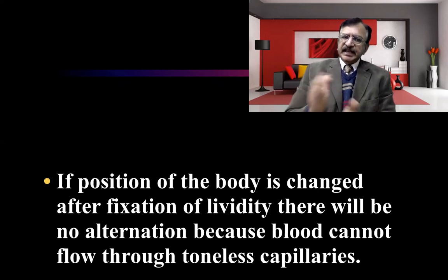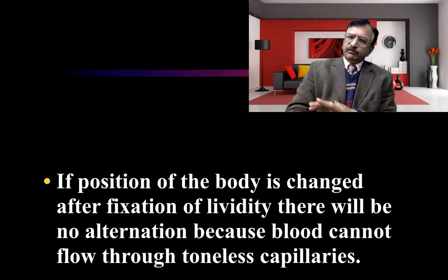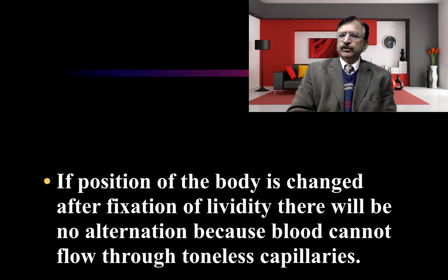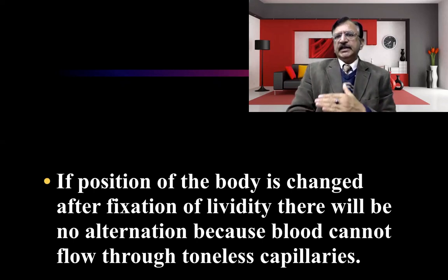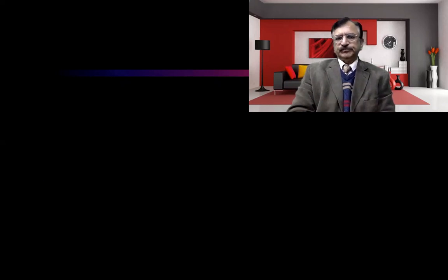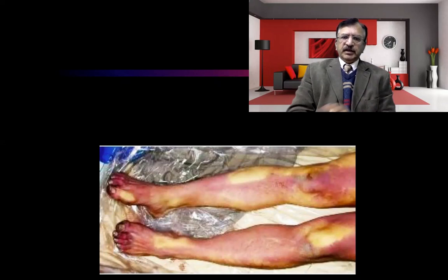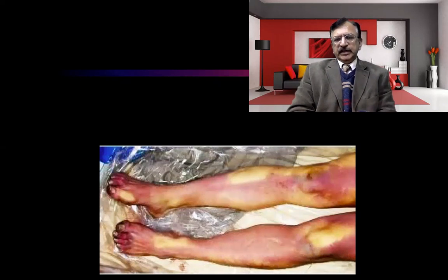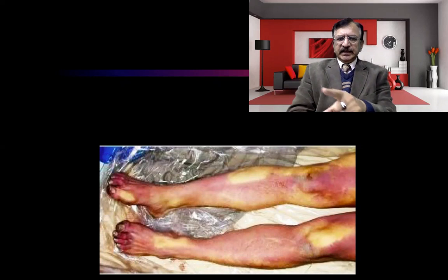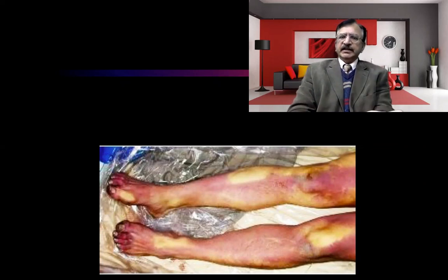If the position of the body is changed after fixation — that is, after eight hours — the blood can no longer flow to the new dependent region, so the staining will not shift. A picture illustrates this: a body was lying prone with post-mortem staining fixed on the front of the legs and feet; when later found supine, the staining had not shifted to the back, remaining on the front.